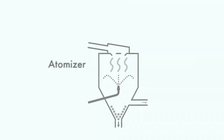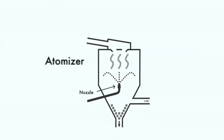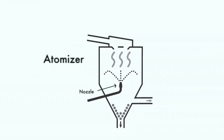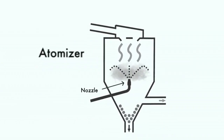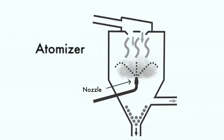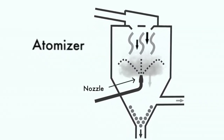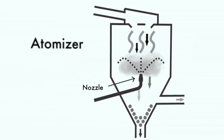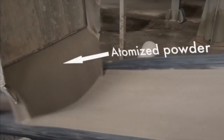The atomizer is equipped with a nozzle. The nozzle sprays the slurry into the middle of a large tank that is fed with a current of hot air. As the slurry becomes airborne, it rapidly dries to form atomized powder.